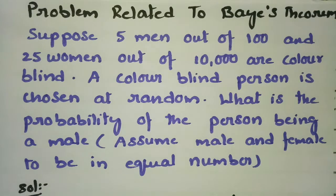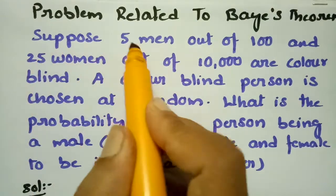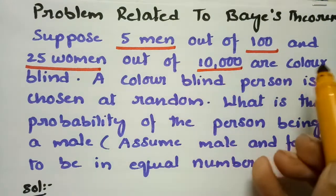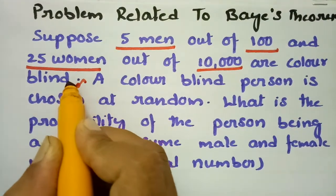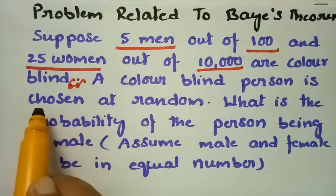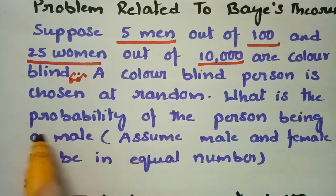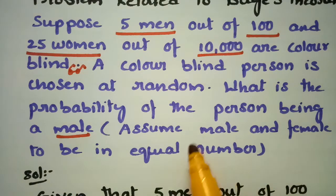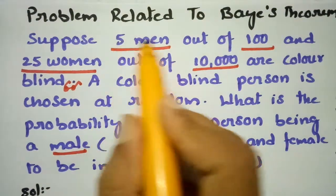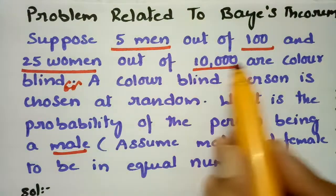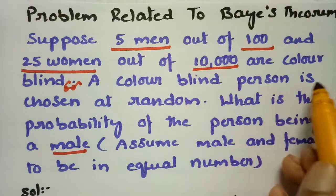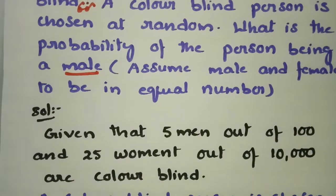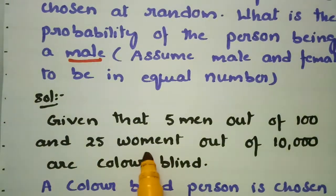This video covers a problem related to Bayes' theorem. Suppose 5 men out of 100 and 25 women out of 10,000 are colorblind. A colorblind person is chosen at random — what is the probability that the person is male? We assume males and females are in equal number.